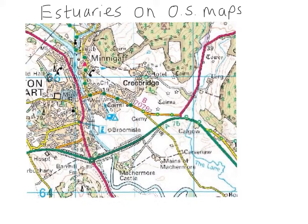And it's very easy to see. Let's follow the river south — it's flowing out towards the sea in this direction. If we look at the river here, it is bounded on both sides by blue lines. But further along, the river is bounded by black lines.